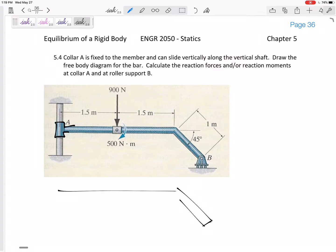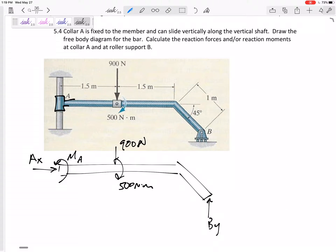So maybe I want to redraw this for the free body diagram. So what do I have right here? It's free to go up and down, but not left and right. So I've got an AX, but that could come out negative. And I have an MA. I have a reaction moment because a fixed collar restricts the rotation. I've got 900 Newtons right here. I've got 500 Newton meter moment. I've got a roller, which would only have a BY, perpendicular to the ground, perpendicular to the incline. So those are my only forces. Let me draw the dimensions: 1.5, 1.5, 1 meter at a 45 degree angle.